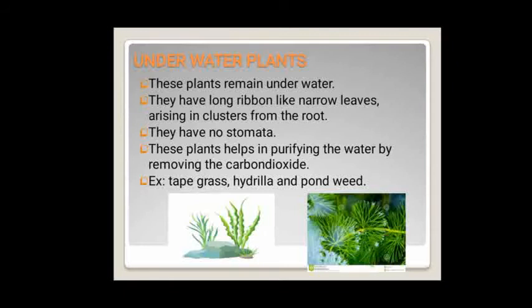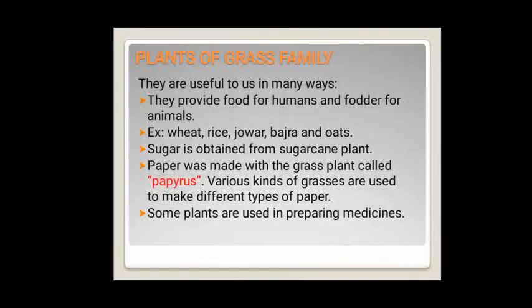These plants are also grown in aquariums at our homes to clean the water. Next, there is one special type: the grass family. They are very useful to us in many ways. They provide food for humans and fodder for animals. Examples are wheat, rice, jowar, bajra and oats. Sugar is also obtained from the sugar cane plant, which is also a grass family plant. Paper was made with a grass plant called papyrus, and various kinds of grasses are used to make different types of paper.